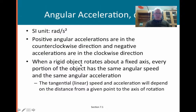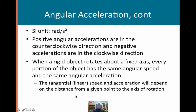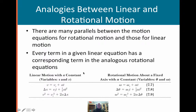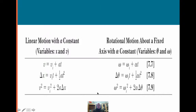Every one of the points along the rotating object are going to have the same angular speed and acceleration, but tangentially it will be different depending on the radius. Here are the kinematic equations we've dealt with for linear motion, and here are the equivalents for rotational motion. These are very equivalent — once you get used to it, it's going to be very similar calculations to what you've done before.